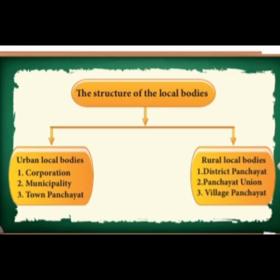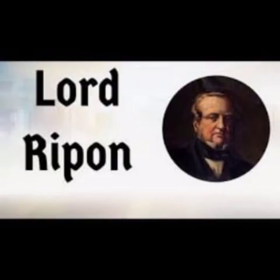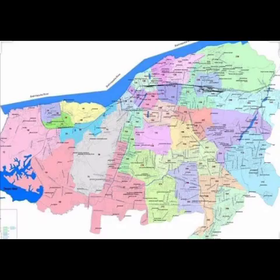The local bodies are classified into urban local bodies and rural local bodies. Corporation, municipality, and town panchayat come under urban local bodies. District panchayat, panchayat union, and village panchayat come under rural local bodies. The father of local bodies is Lord Rippon. Tamil Nadu consists of 38 districts, 388 panchayat unions, and 12,620 gram panchayats.